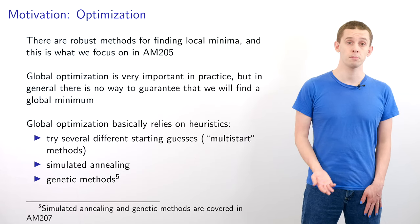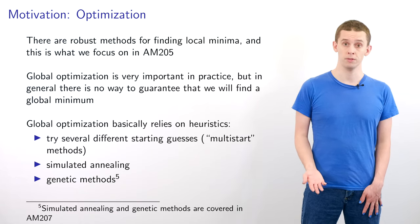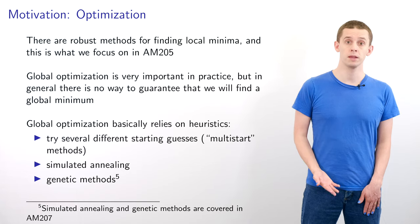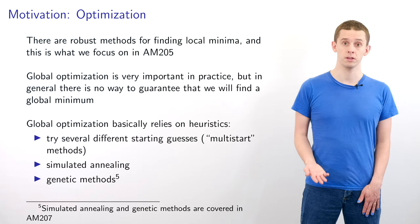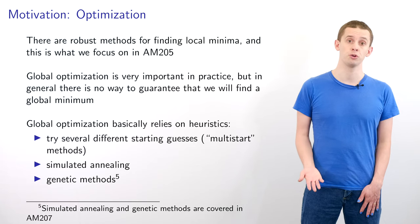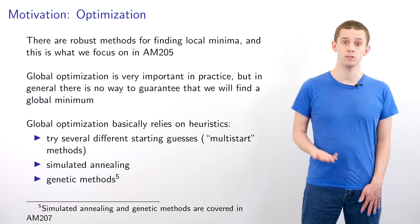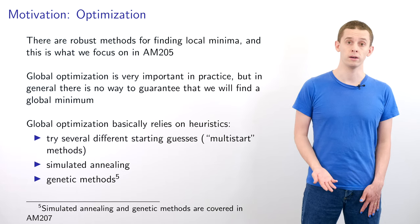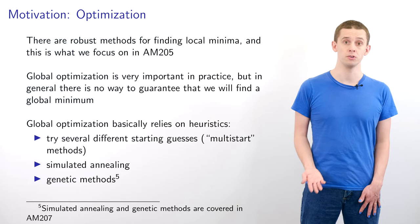And there are also a number of techniques that we can use that often rely on heuristics or stochastic sampling that can more reliably find global minima. And some examples are multi-start methods where we apply local optimization techniques but from many different initial starting points, simulated annealing and genetic algorithms. And we're not going to look at these in detail in AM205, but if you're interested in these there is another course, Harvard AM207, where a number of these topics are covered in more detail.